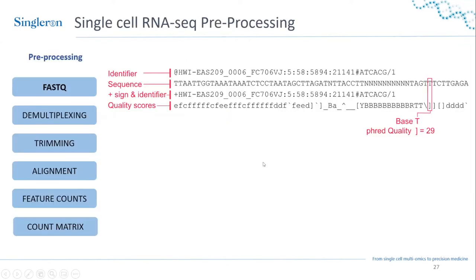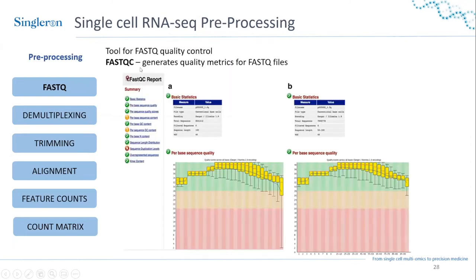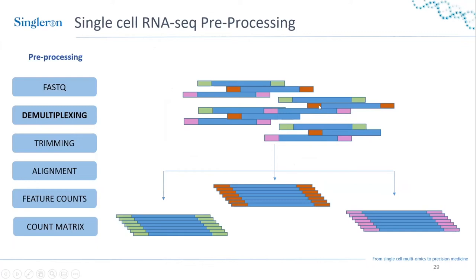We start with a FASTQ file — the key thing to note is that you have the sequence and a quality score for each base that was read. To assess whether your FASTQ files have high quality, you can use a FastQC report that gives you basic quality metrics. You usually want your reads to be in the green part of the graph, not yellow or red, and this tells you whether you can proceed with the analysis.